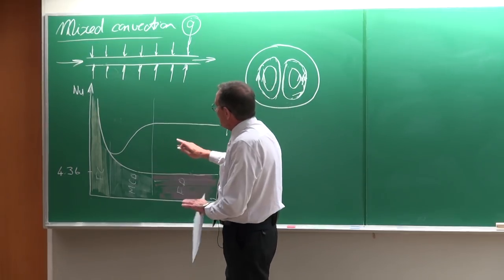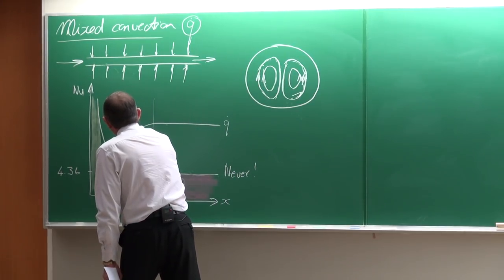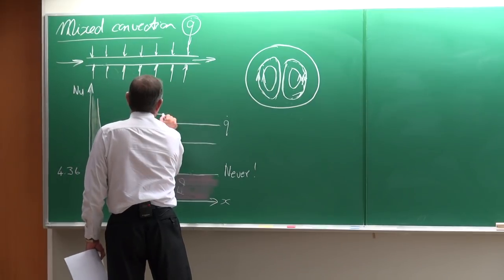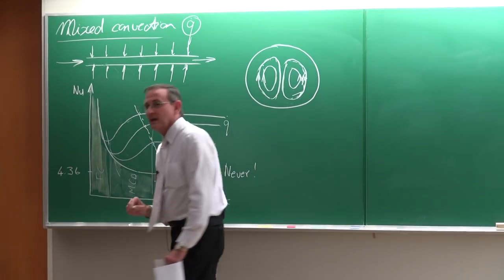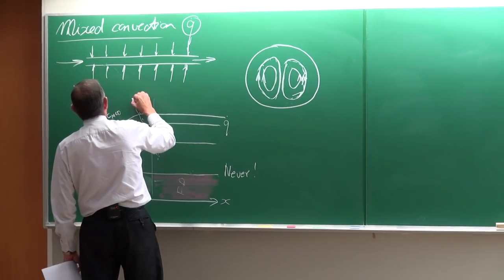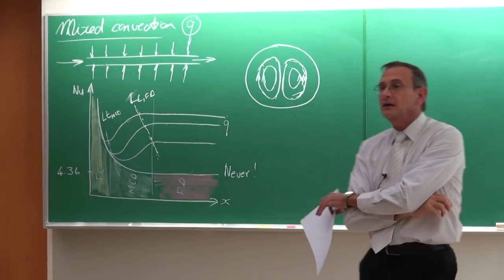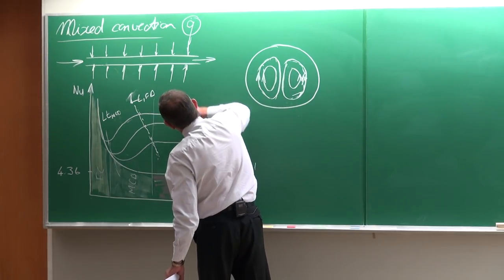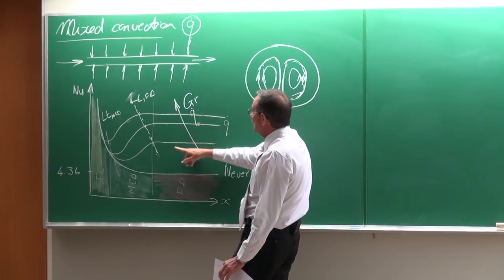To distinguish between these flow regimes we need to identify these transition points. Depending on the heat flux — for lower heat fluxes we get one behavior, for higher heat fluxes another. Therefore we are interested in the lines called LT-MCD (the mixed convection developing line) and the LT line for fully developed flow. There are equations available to calculate these. These lines correspond to an increase in Grashof number or heat flux; as heat flux increases, you move up to these lines.